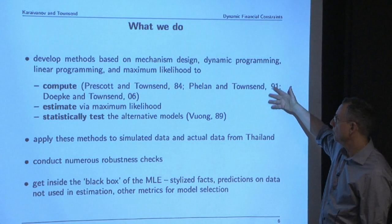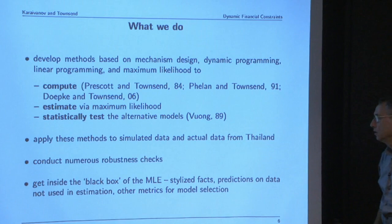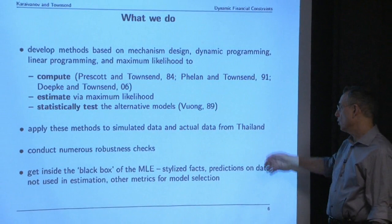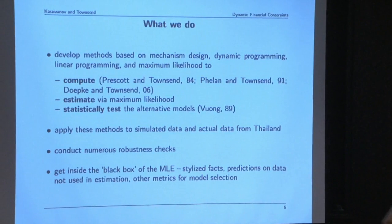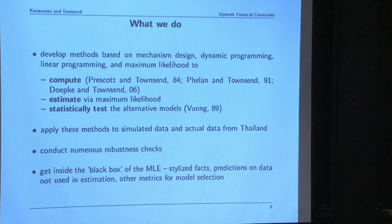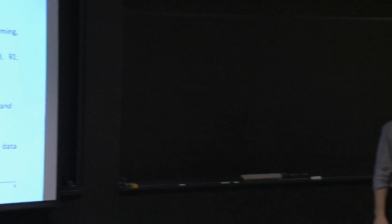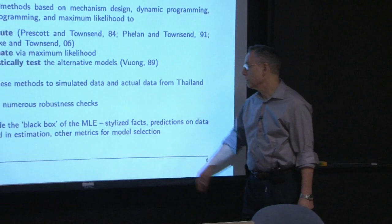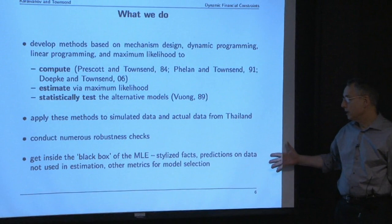We can do it on actual data—I'm going to focus on the contrast between the urban data and the rural data. We can also use simulated data. My preferred technique is to generate the data from the model itself; then you know for sure what's generating the data and see whether you get back what you put in, in terms of the financial regime and the underlying parameters. The results are reassuring, subject to measurement error.